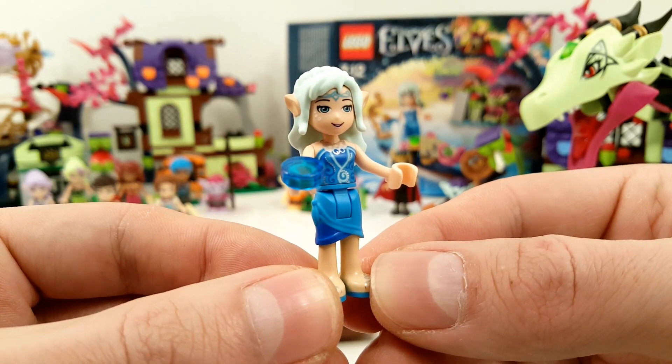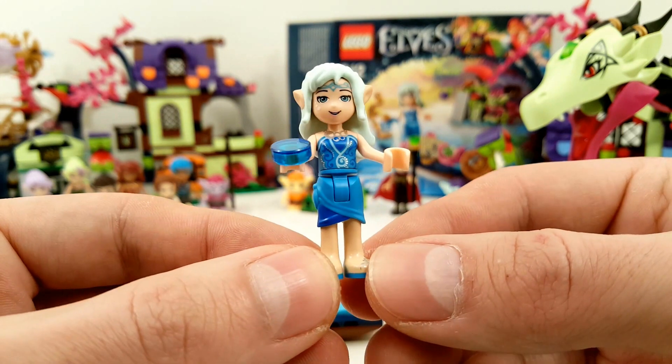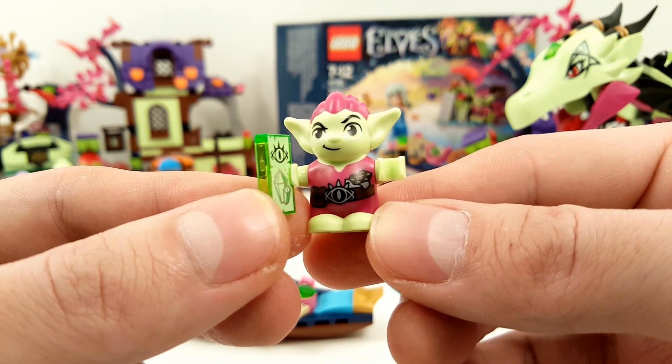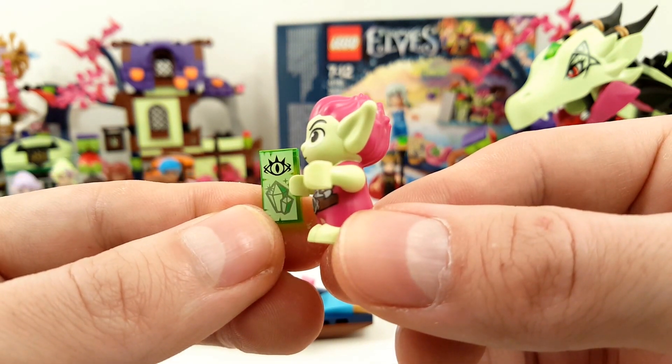Here we have Naida. Of course Naida also has a new attire, like all the other elves in all the other sets. And here we have Roblin the Goblin with instructions to get some more crystals for the Goblin King.